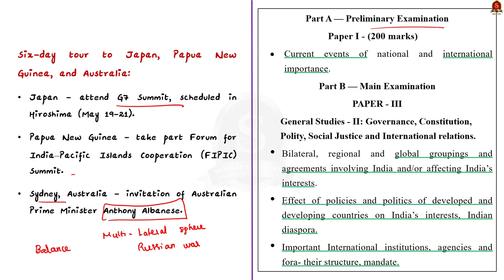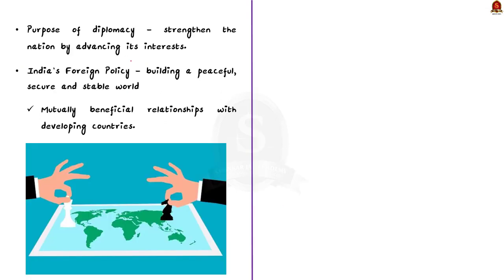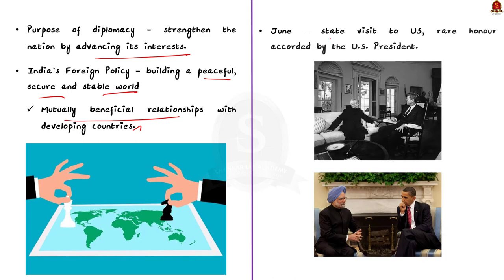The purpose of diplomacy is to strengthen the nation it serves by advancing its interests. One of India's core foreign policy principles is to build a peaceful, secure and stable world through mutually beneficial relationships with developing countries. India's engagement does not stop with this 6-day tour. After the tour, Mr. Modi will be in Washington in June for a state visit — a rare honor accorded by the US President. Only two Indian leaders had this honor before: President Sarvepalli Radhakrishnan in 1963 and former Prime Minister Manmohan Singh in 2009.